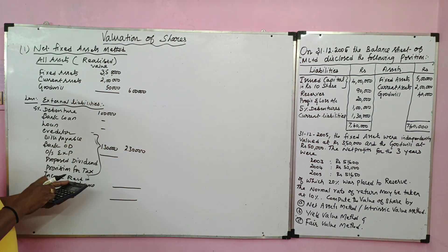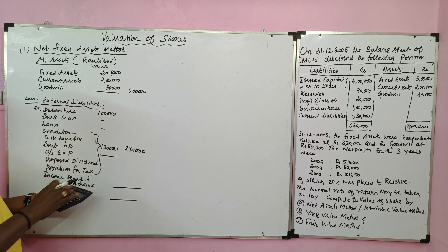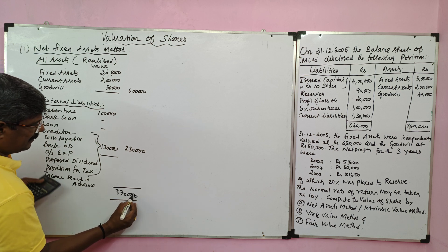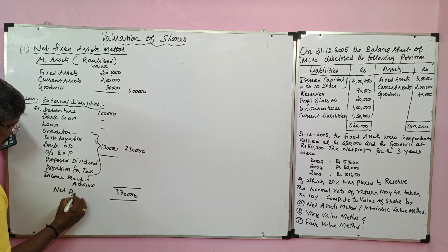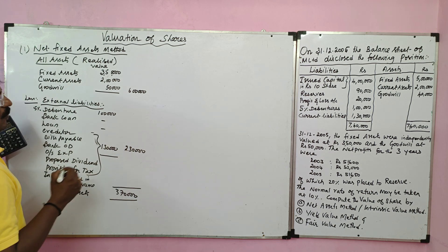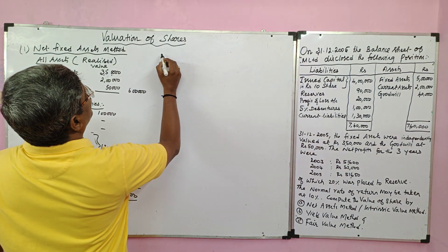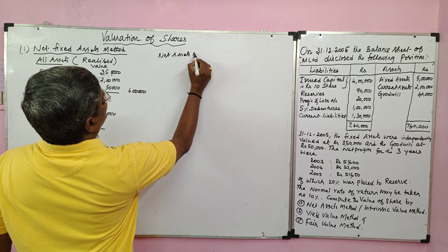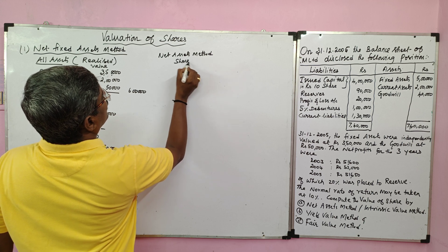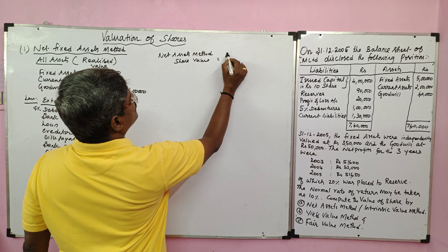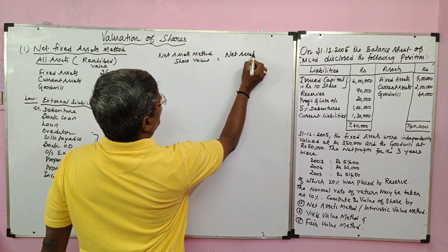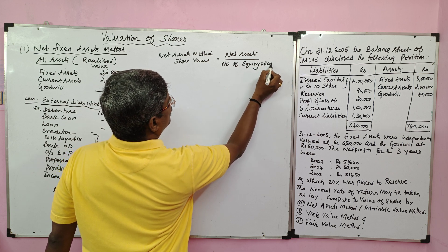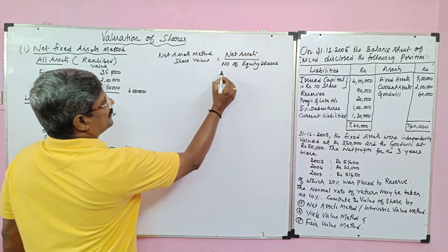Realized value of assets rupees 6 lakh minus external liabilities rupees 2 lakh 30 thousand — the balance of rupees 3 lakh 70 thousand is called net assets. Now we can find the share value by the net asset method. The formula is: share value = net assets divided by number of equity shares.